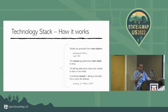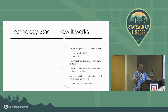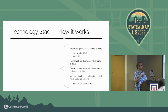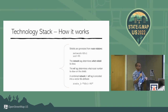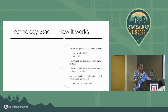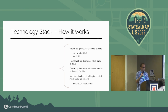Since we're a vector tile renderer, the network and ref tags get combined into an attribute that shows up in the tile — something like 'route_1=US:I 95', and then route_2, route_3, route_4, as many as needed to create the concurrency.